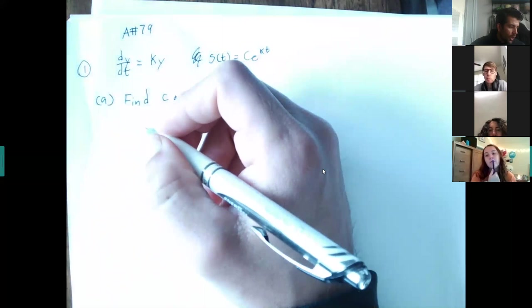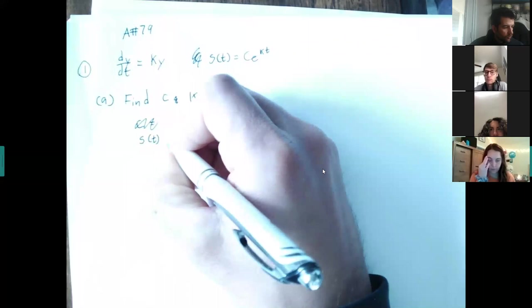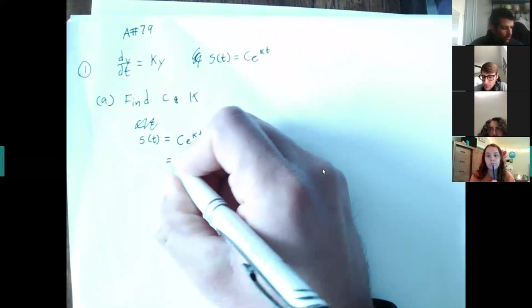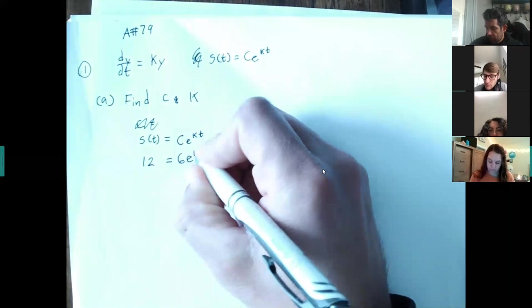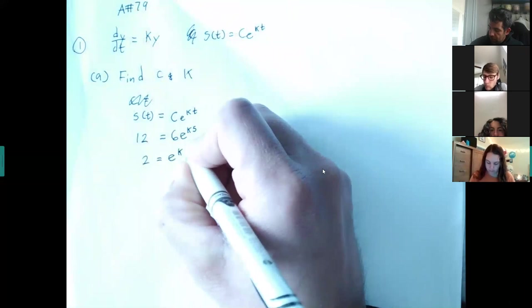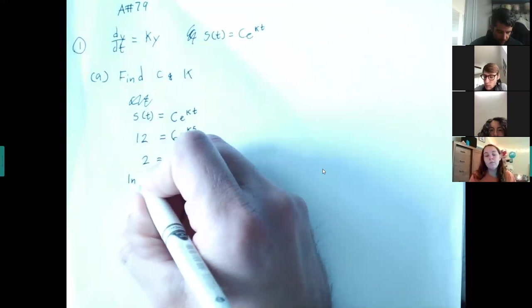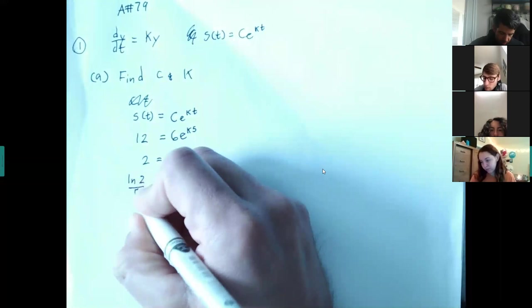If we start off with that equation, notice that it says the consumption doubles every five years. So S of T — C is basically your starting point, and 2C is your ending point because it doubles. I'm going to replace T with five and then solve for K. Dividing both sides by C gives 2, then taking the natural log of both sides gives 5K. Dividing both sides by five gives us K.